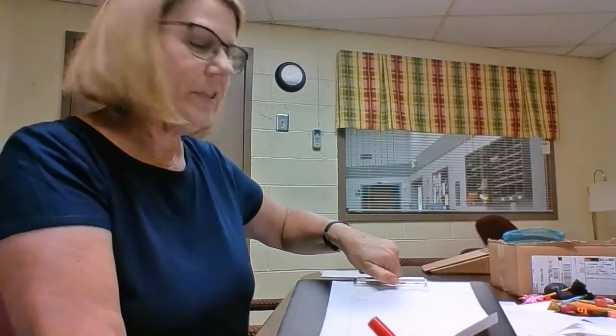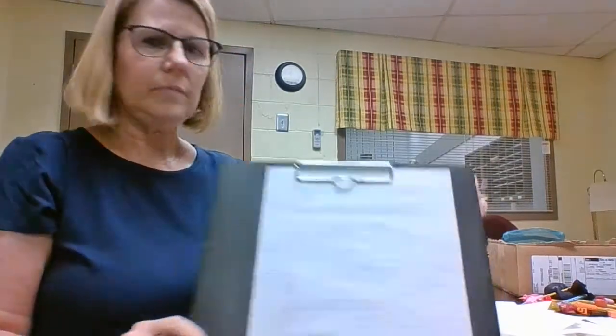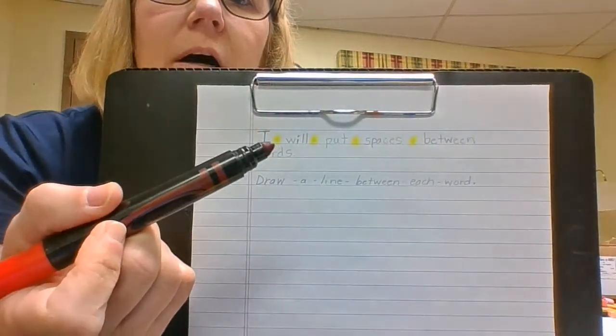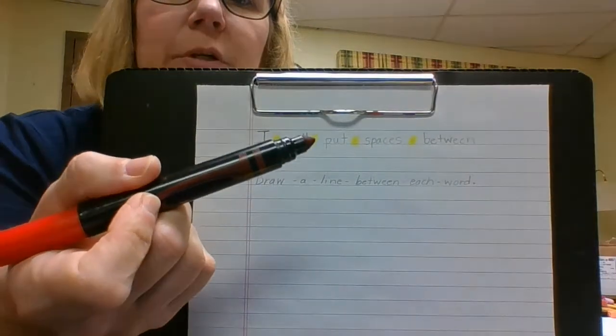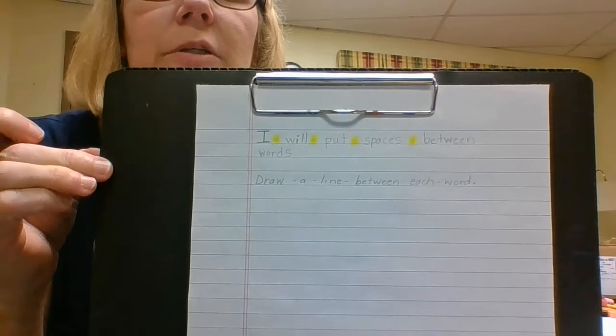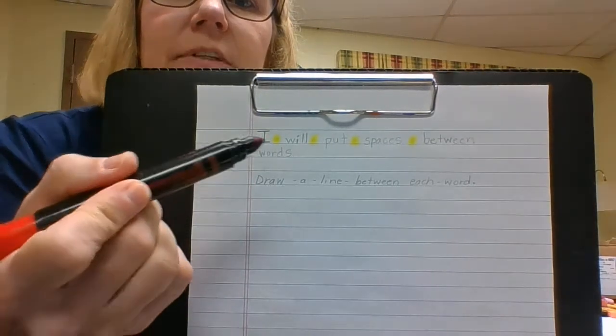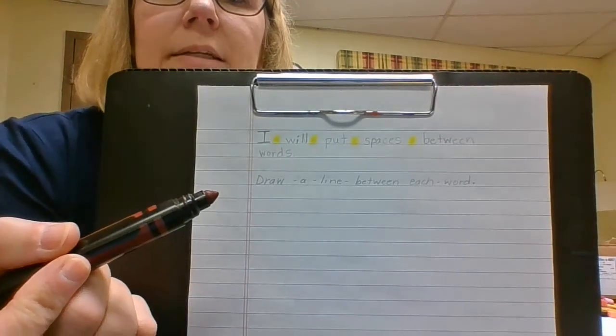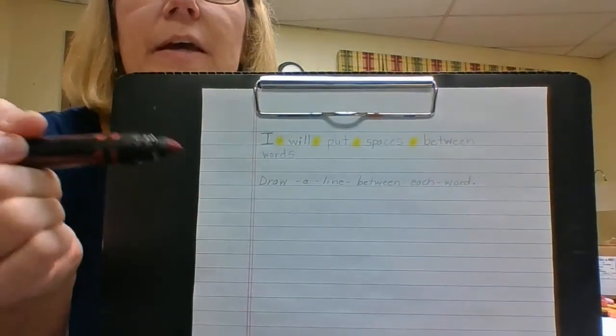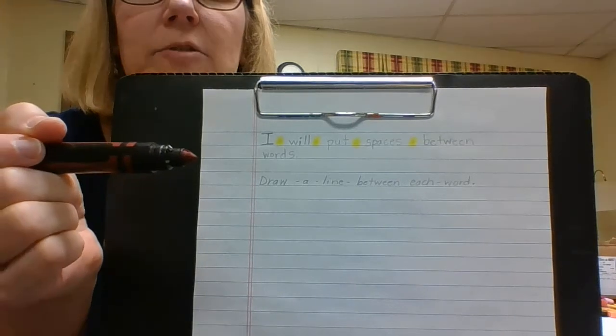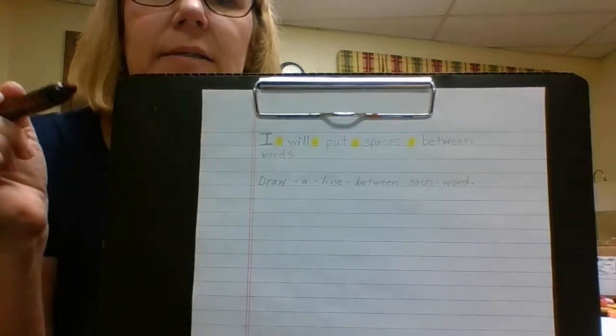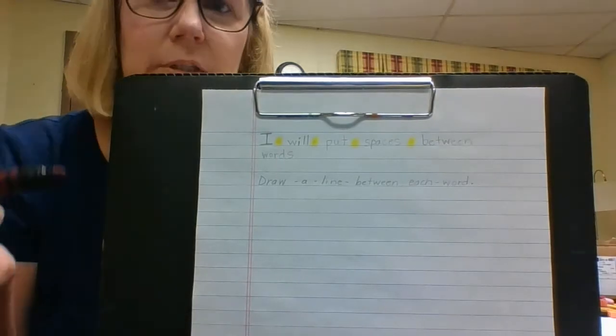For kids that have trouble with spacing, I will often give them a demonstration of highlights in between the words, so they will kind of see that space. And then I will have them practice and put the highlights in their sentence to see if they can recognize where the spaces are supposed to be, or if they put too much space or not enough space. You can also use a spacer.